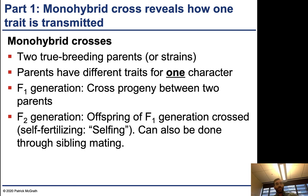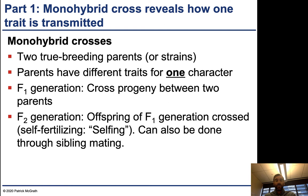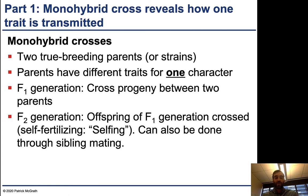The most simple situation is a monohybrid cross, which reveals how one trait is transmitted. Monohybrid crosses start with two true breeding — homozygous — parents, where the plants have different traits for one character. The F1 generation is the cross-progeny between those two parents. You then use the F1 generation to self-fertilize, and that F1 generation produces a large number of F2 offspring. In this chapter, this is done through selfing.